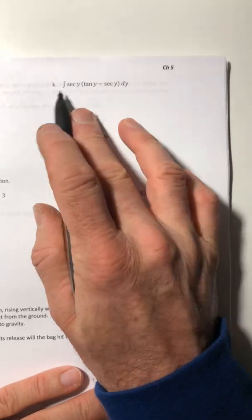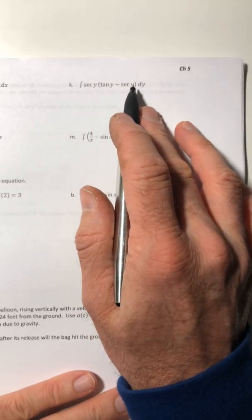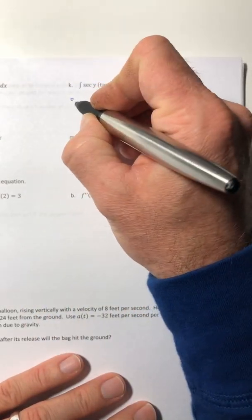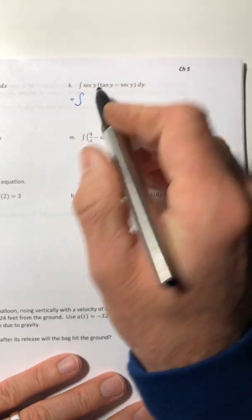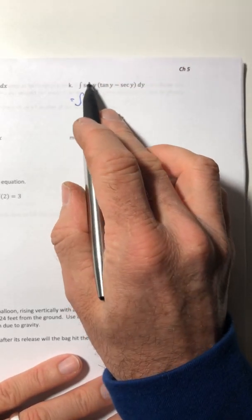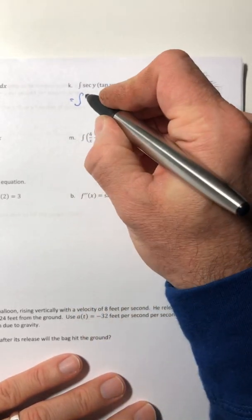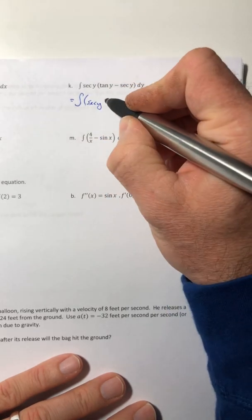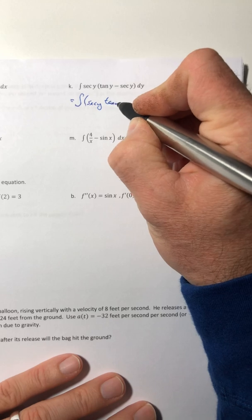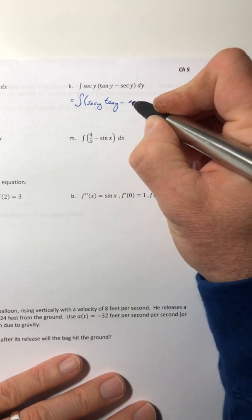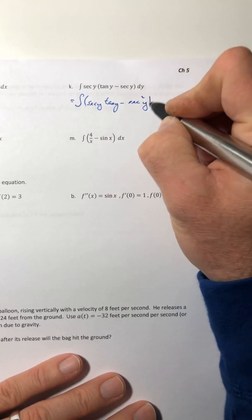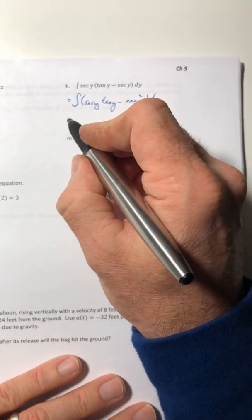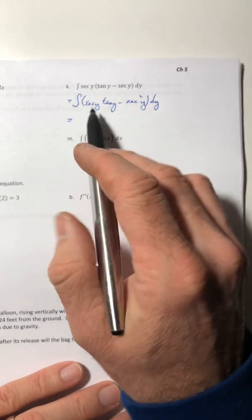This one here doesn't fit any of your basic rules, so when that happens you have to play with it a little bit. So we're gonna take this secant out here and we're gonna distribute. So secant y tangent y minus secant squared of y.